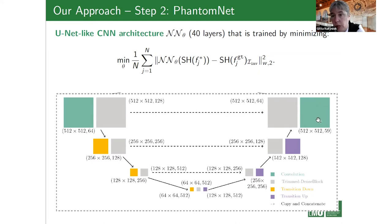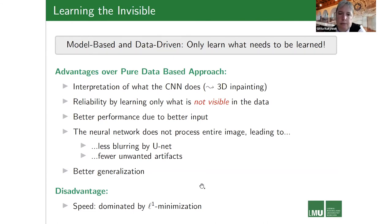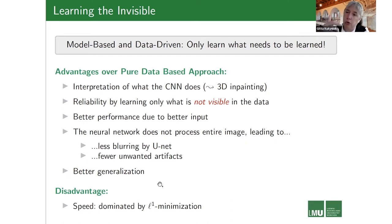We use a U-Net architecture — a classical network for inverse problems shaped like a 'U.' It first compresses the input, then expands it back to the image size, with skip connections to transfer information between the encoder and decoder. The key advantage of our approach is that we only learn what needs to be learned, giving much more stability than end-to-end approaches. The neural network does exactly the recovery of the wavefront set, and does not process the entire image, which gives stability.